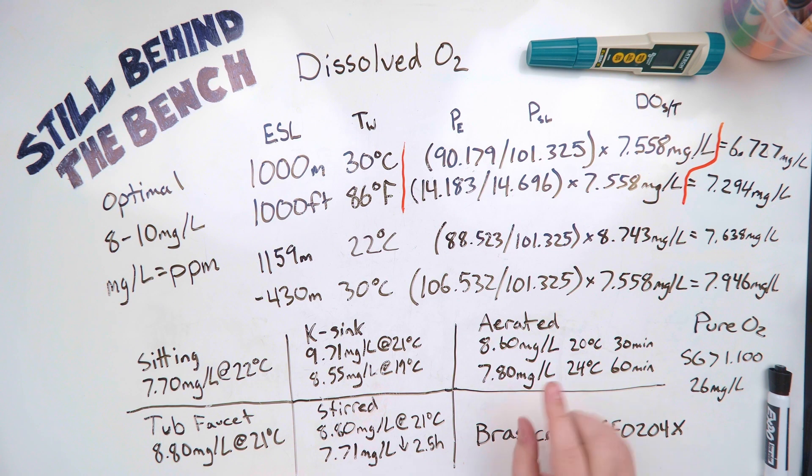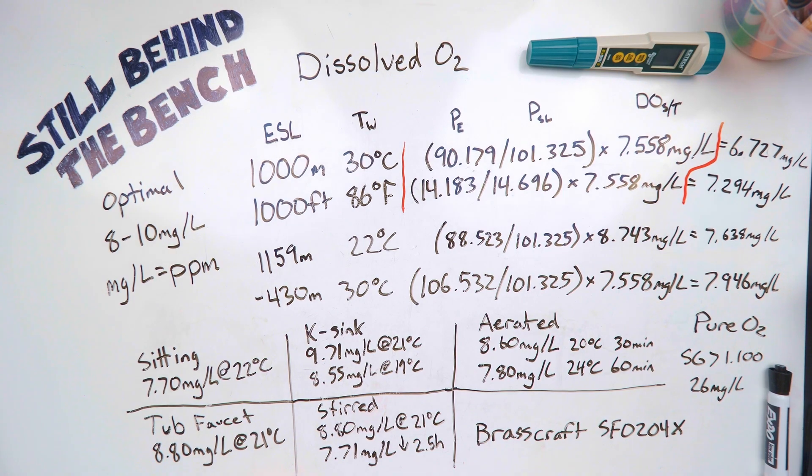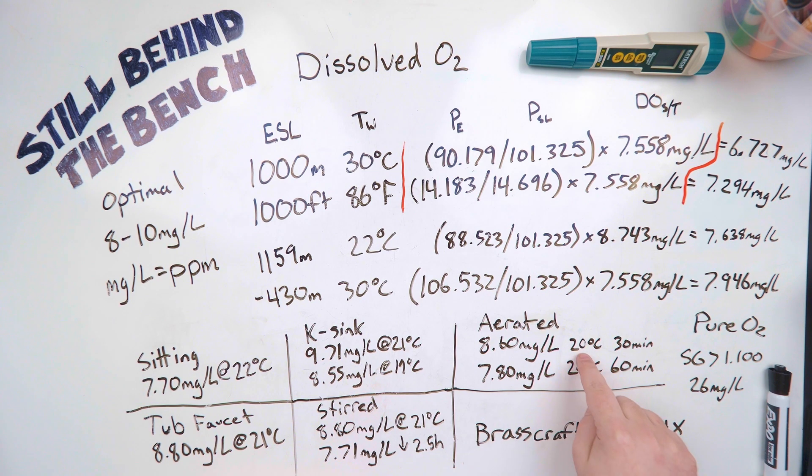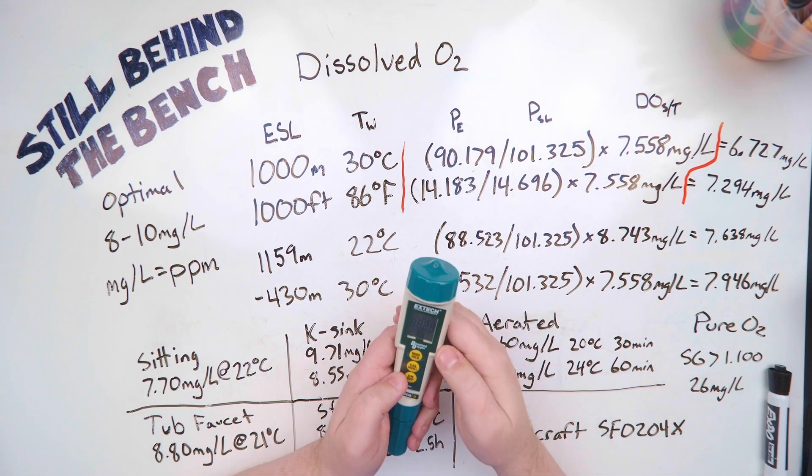The one that surprised me the most at first was the aeration. So I have this giant pump. So I used it to aerate four gallons in a five gallon bucket, which would be about 15 liters. So the water in it was 20 degrees. After 30 minutes, it was 8.6 milligrams per liter. So I was like, that's great. It's only going to go up from there. I left it for another 30 minutes. And when I measured it again, it had gone down, not up. And it wasn't until I saw the temperature.